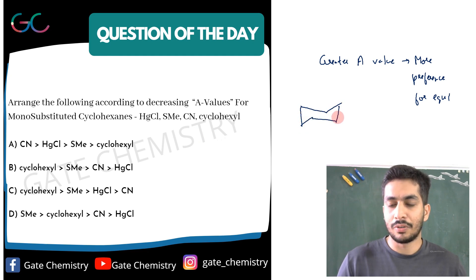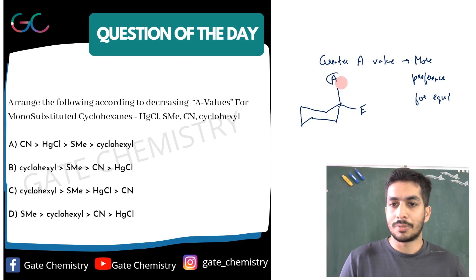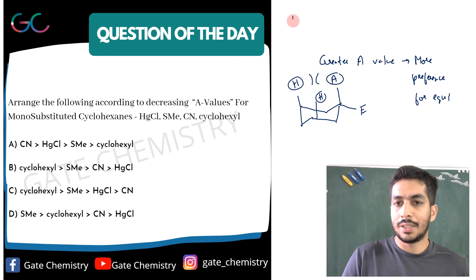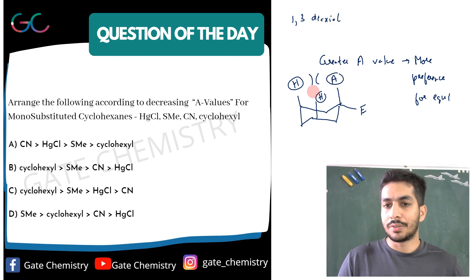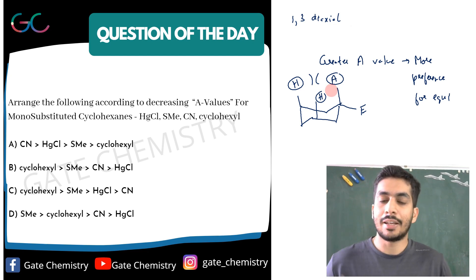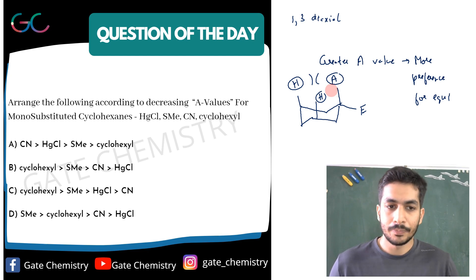Some of you might be confused about why groups prefer the equatorial position. In the equatorial position, there is more space available. In the axial position, the substituent experiences 1,3-axial interactions — steric repulsions from the hydrogens at C1 and C3. These are repulsive in nature. It was previously thought that A-values depend only on steric factors, but I'll show you that other factors also come into play.